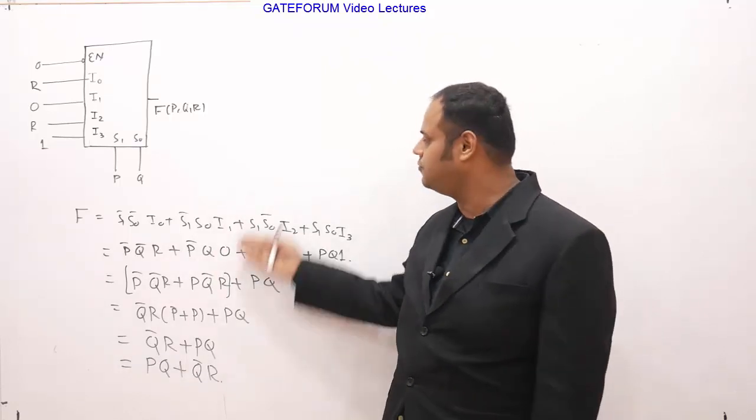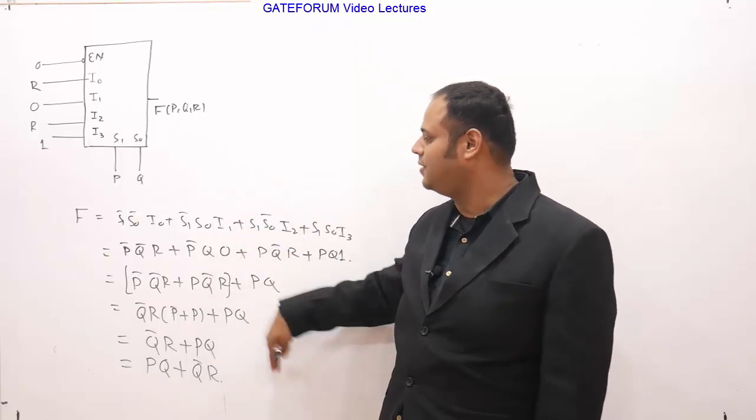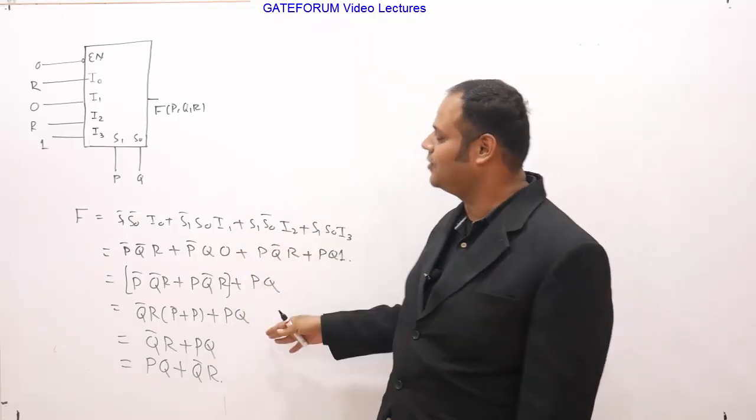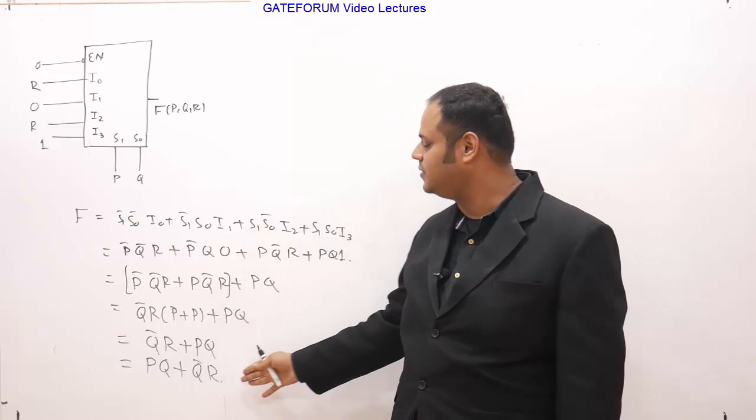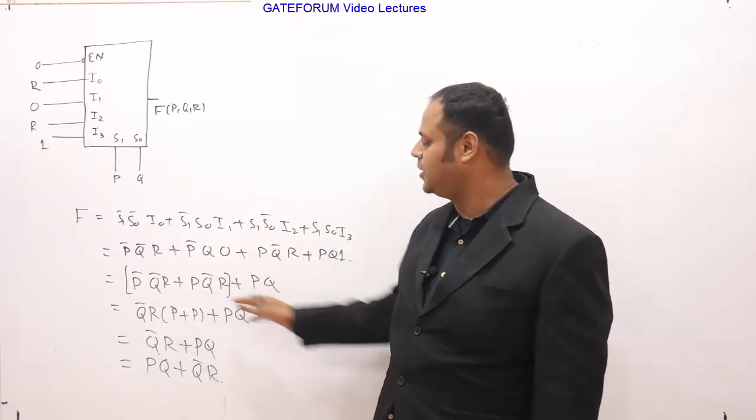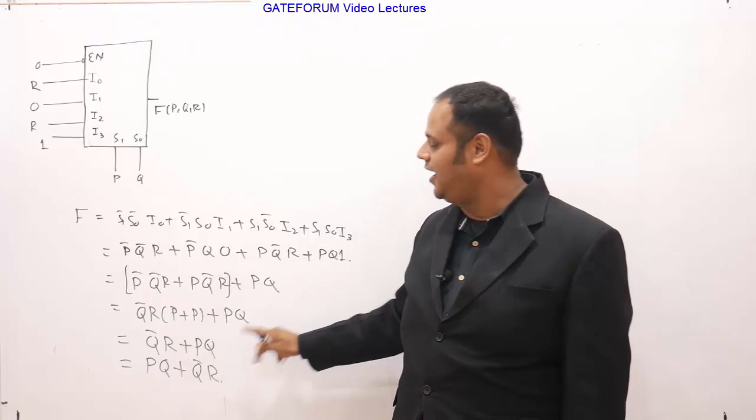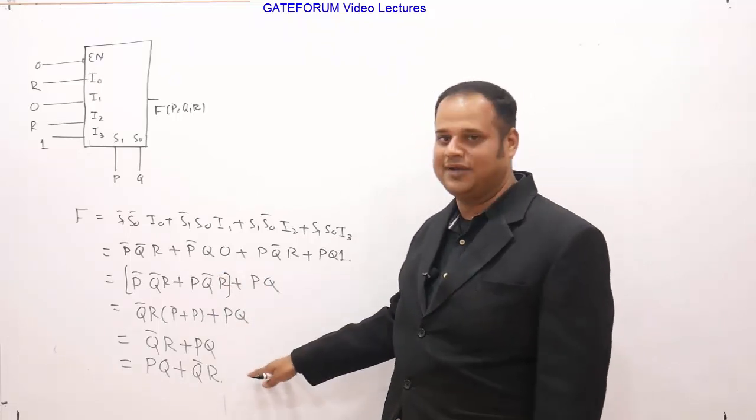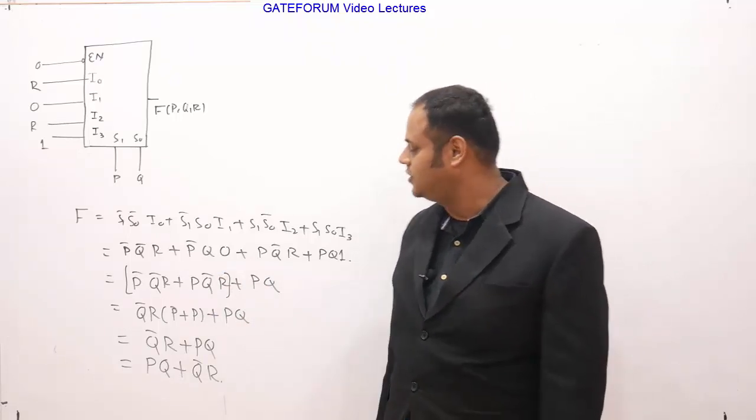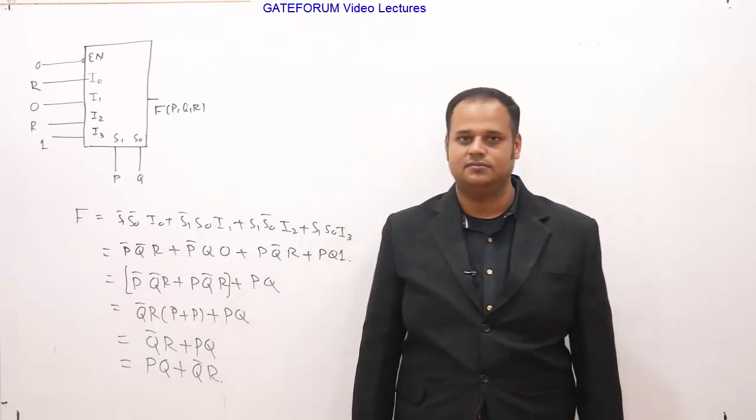So again, I am telling this much of intermediate steps you can cut down because this step I am not going to cut down, but for a detailed explanation, I am explaining you. But directly also you can get the answer. Directly somebody can write these expressions and you can get this answer, this is hardly 7 to 10 second job, right? So the answer is PQ plus Q bar R.